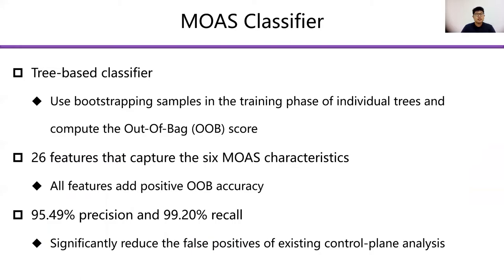We train a machine learning classifier and select 26 features that capture the six MOAS characteristics well. The out-of-bag (OOB) accuracy score from our ground truth is 95.49%. We also test the MOAS classifier in practice, and it can significantly reduce the false positives of existing control plane analysis with a recall of 99.2%.